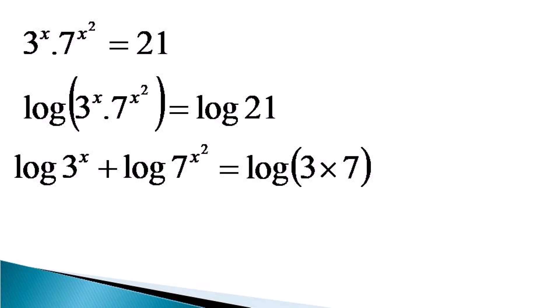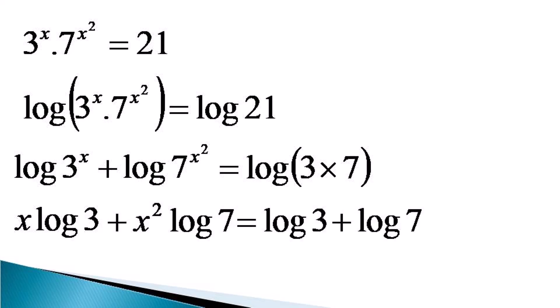Now on the left hand side we use the power law of log to get x log 3 as the first term plus the second term becomes x square log 7, which is equal to log 3 plus log 7 after using the multiplication rule of log.